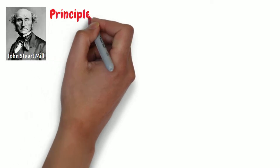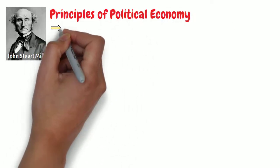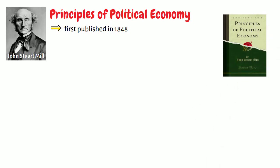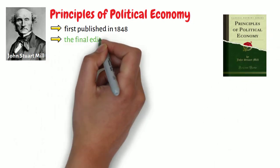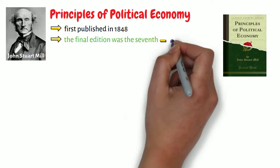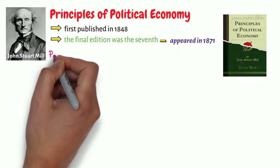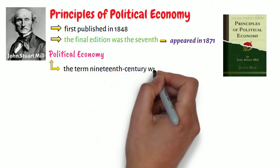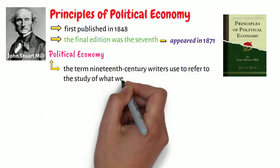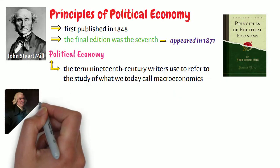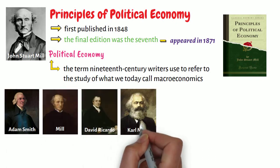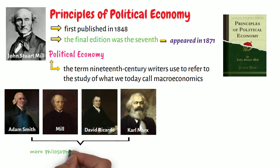John Stuart Mill's Principles of Political Economy was first published in 1848, and it went through various editions. The final edition was the seventh, which appeared in 1871. Political economy is the term 19th century writers use to refer to the study of what we today call macroeconomics, though its practitioners, such as Adam Smith, Mill, David Ricardo, and Karl Marx, were more philosophical and less empirical in their methods than modern economists.